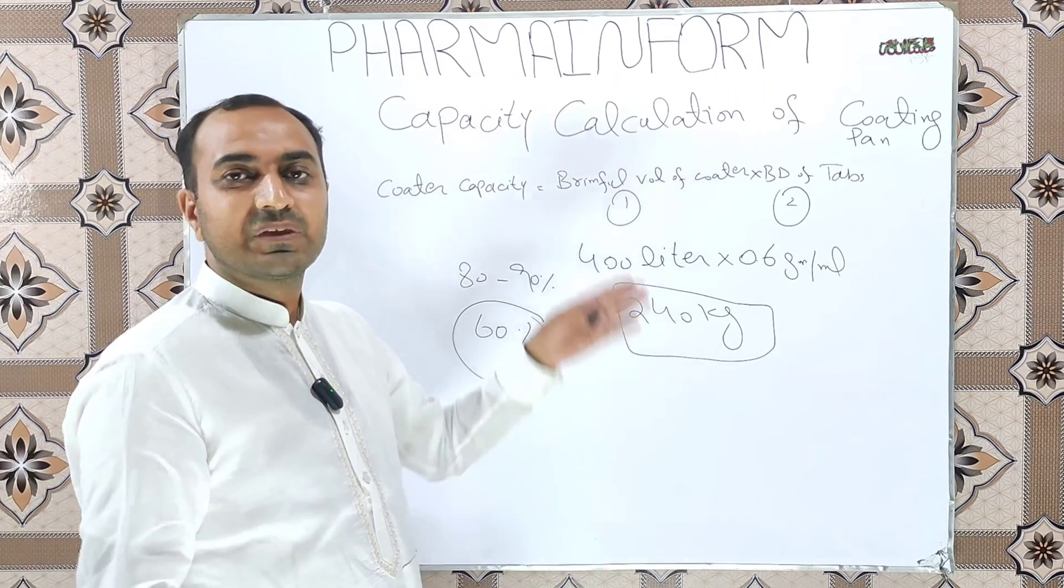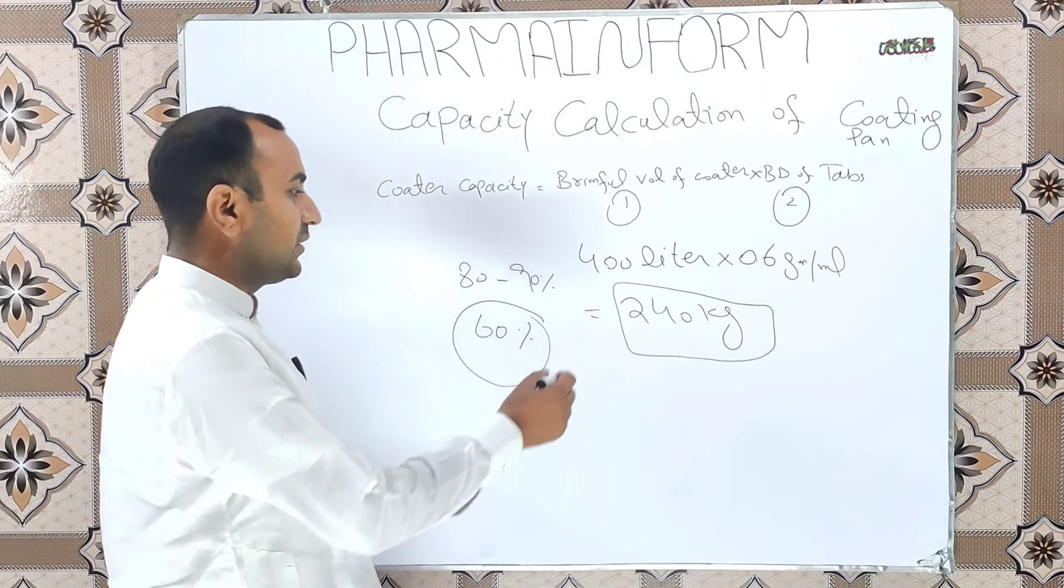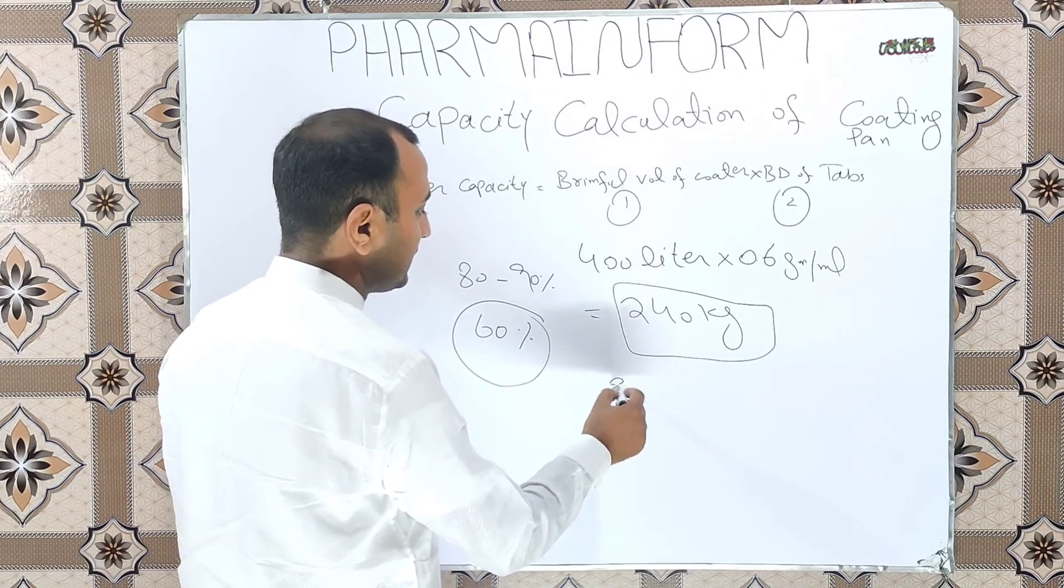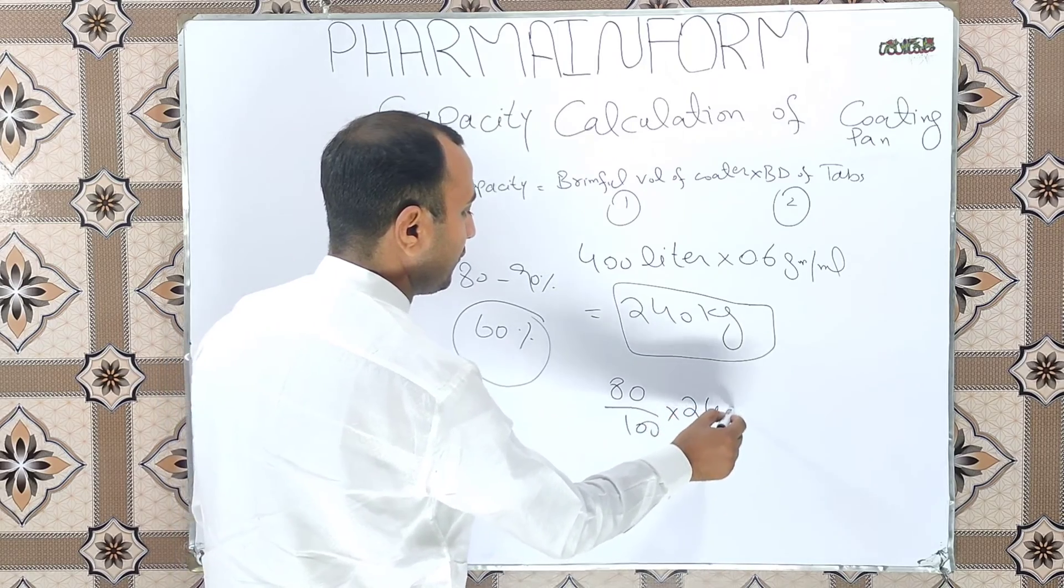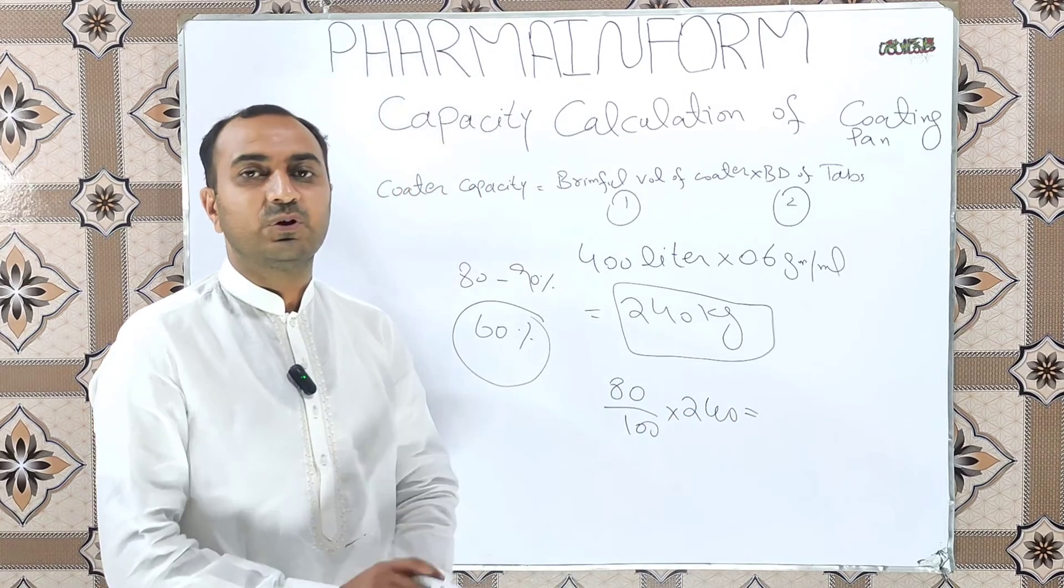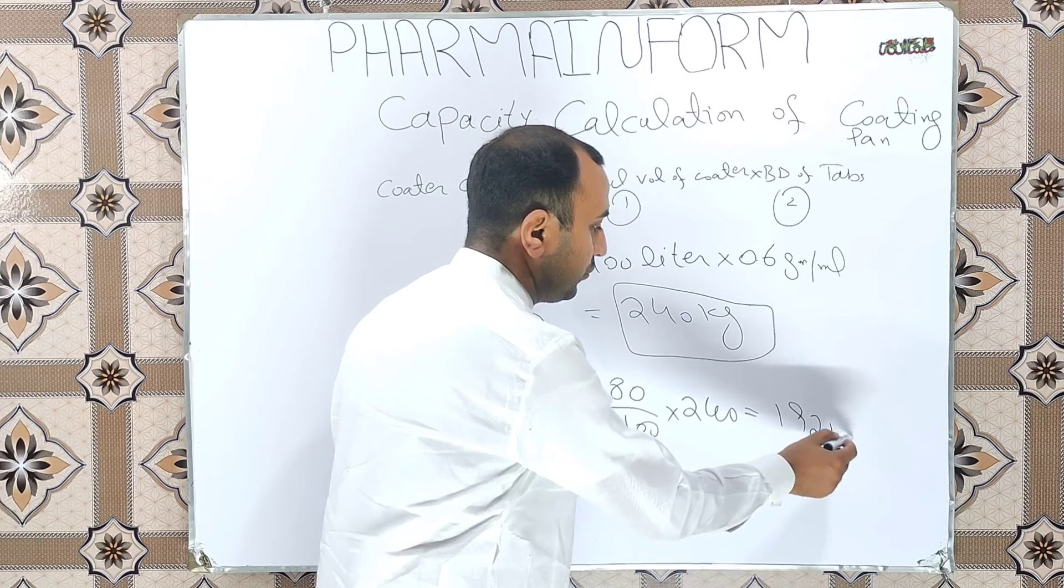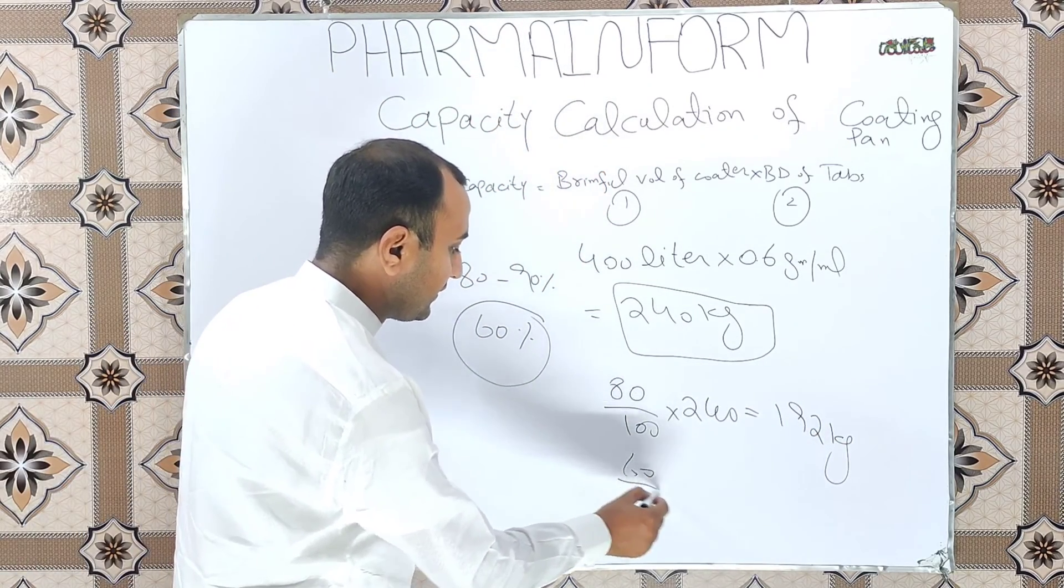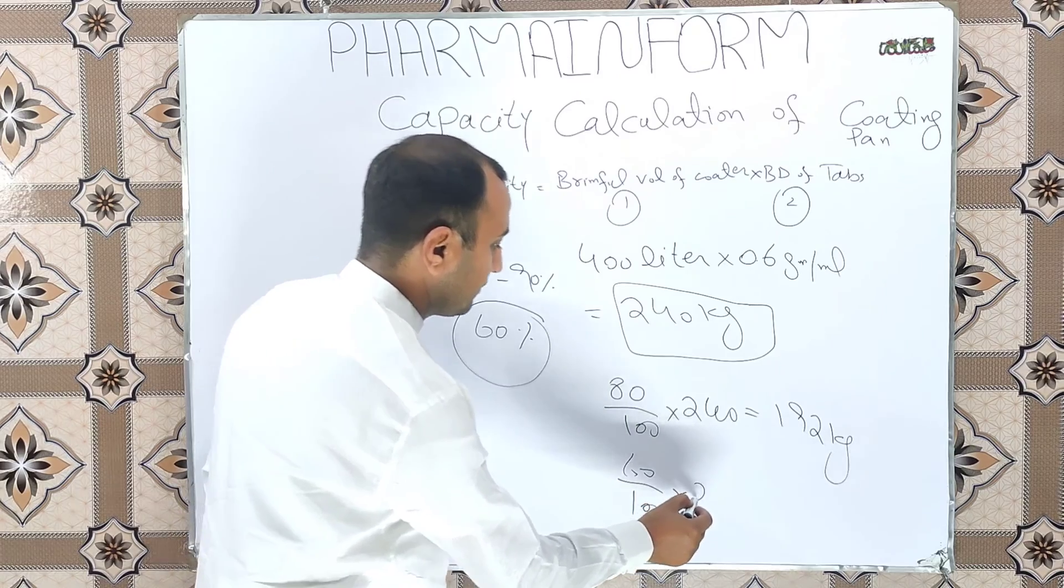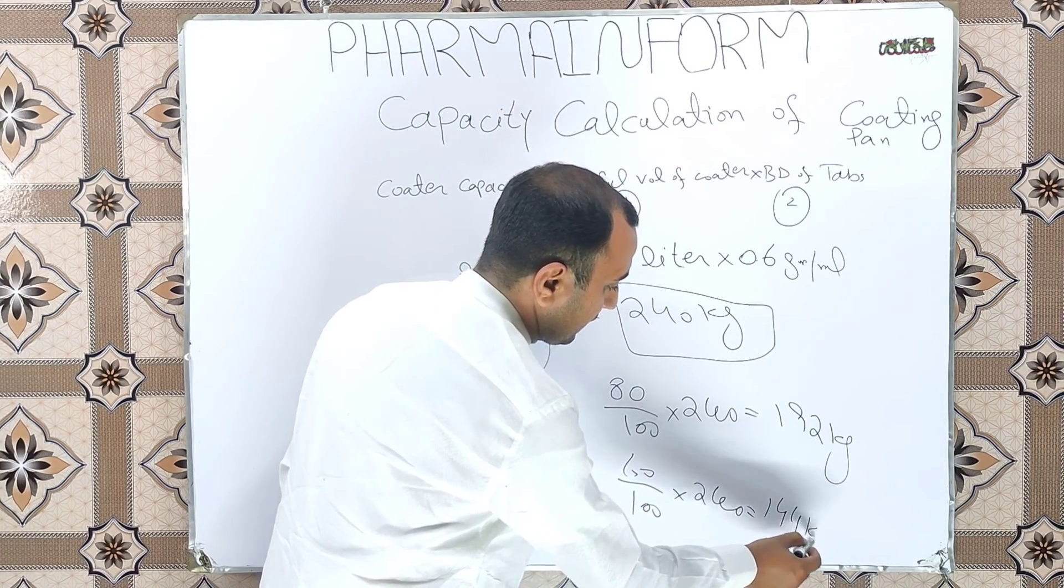So what will be the maximum capacity for the 240 kilograms? For this we will take 80%, and 80% calculation of 240 kilograms is equal to 192 kilograms, and for the lower side 60% is equal to 144 kilograms.